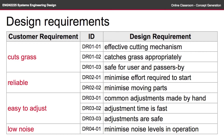Remember the design requirements we came across in the Customer Requirements Online Classroom. We're going to use these as a base to come up with the ideas for our concept generation. Let's consider the first customer requirement and then the first design requirement that came from that, which was Effective Cutting Mechanism. So obviously there are a number of ways that this could be done. Let's have a quick brainstorming session to find out what might be most appropriate.